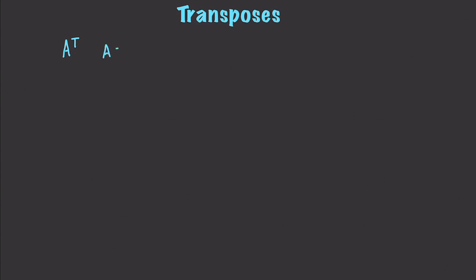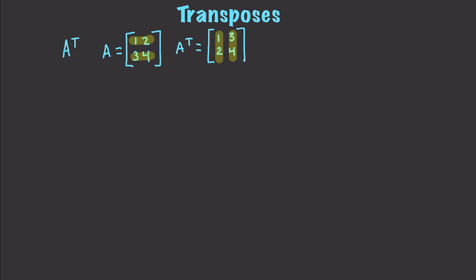The transpose of a matrix is created by swapping all of the rows and columns, and the symbol for a transpose is a T, like that, for a matrix A. So let me give you an example. Transposing is just an operation that is going to be expanded upon as I make additional videos, and you'll see why it is so useful. So let's say we have a matrix 1, 2, 3, and 4. The transpose is just going to be equal to 1, 2, 3, and 4 — I took the 1 and the 2 and put it in this column, I took the 3 and the 4 and put it in that column right there.